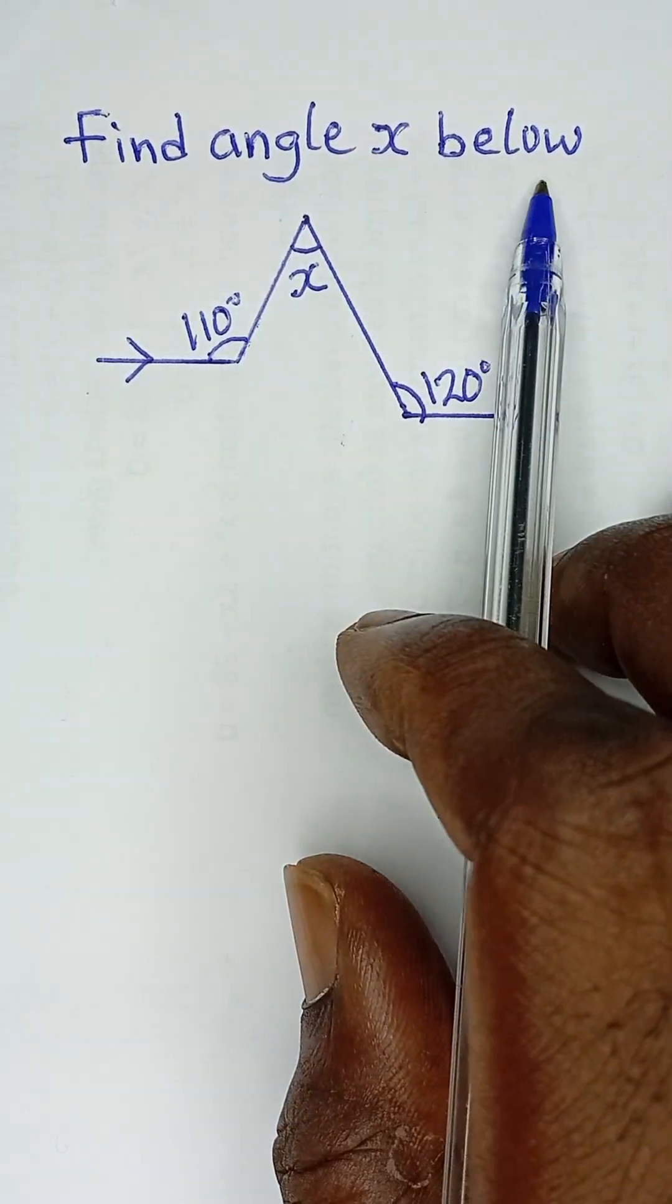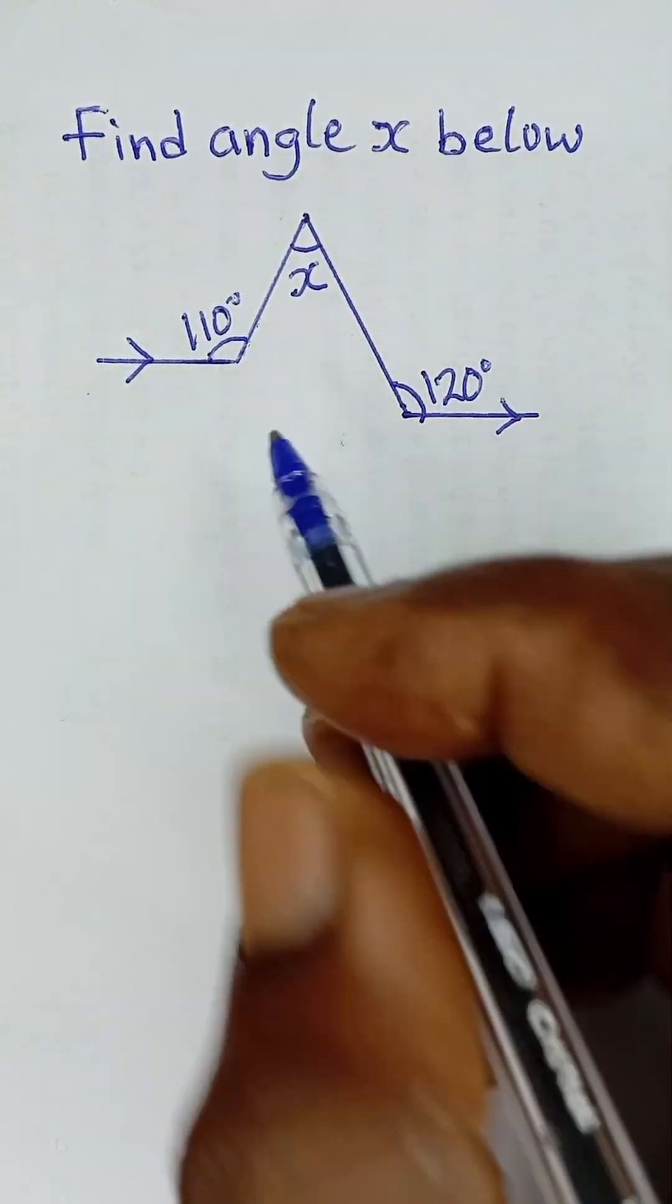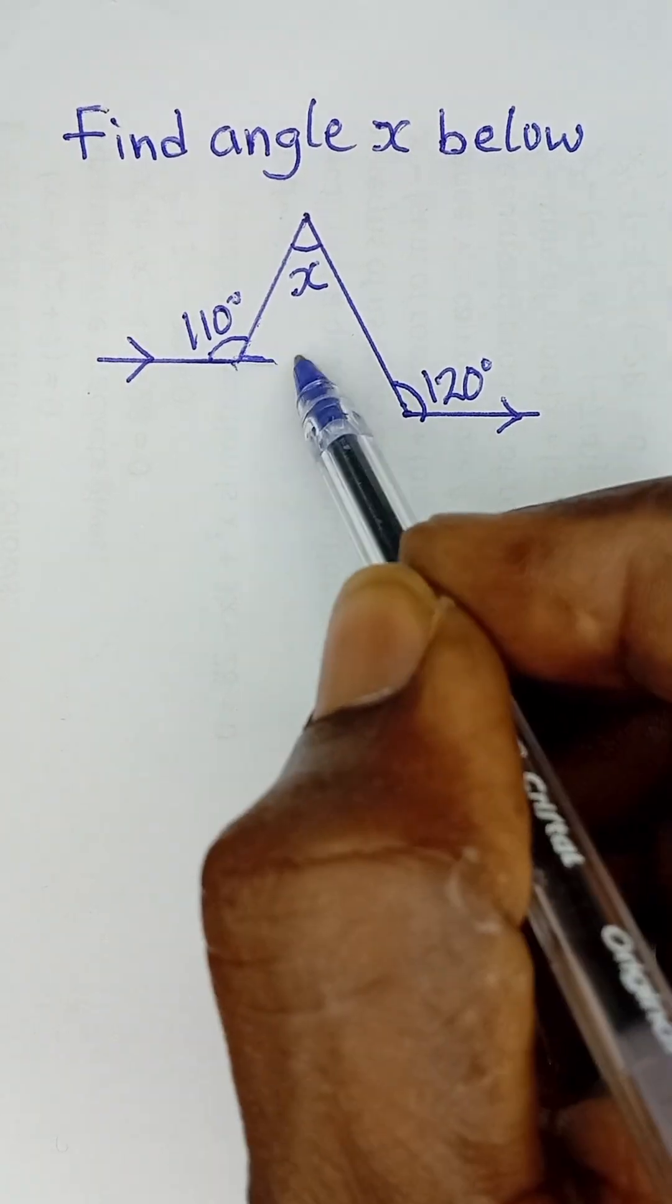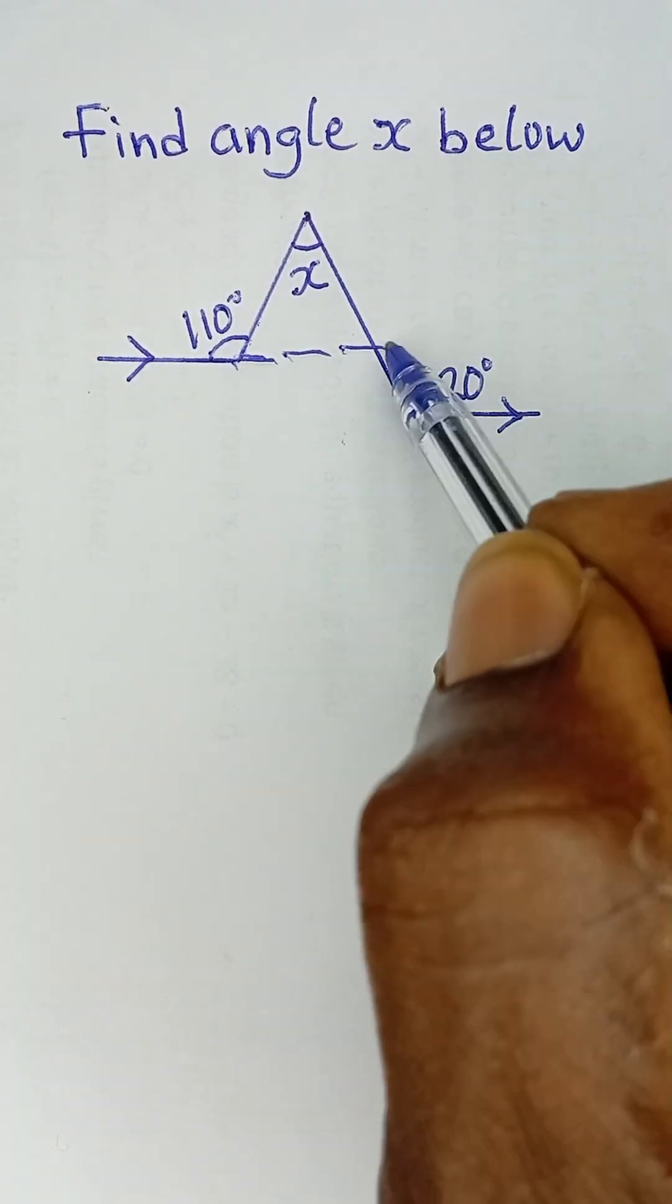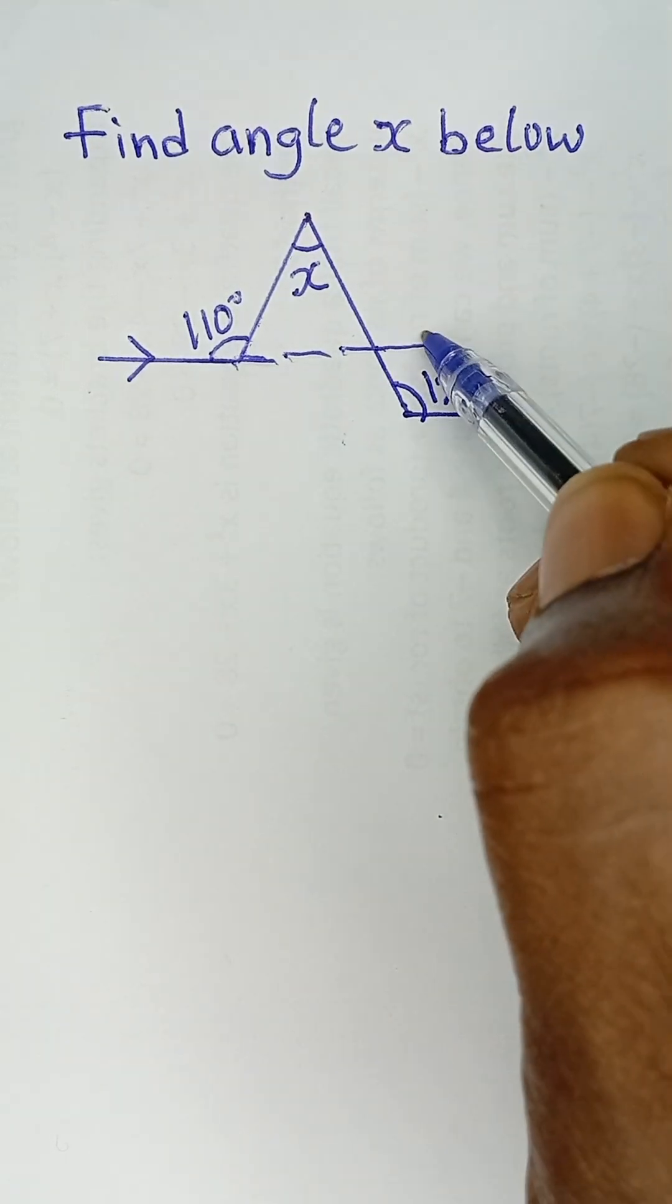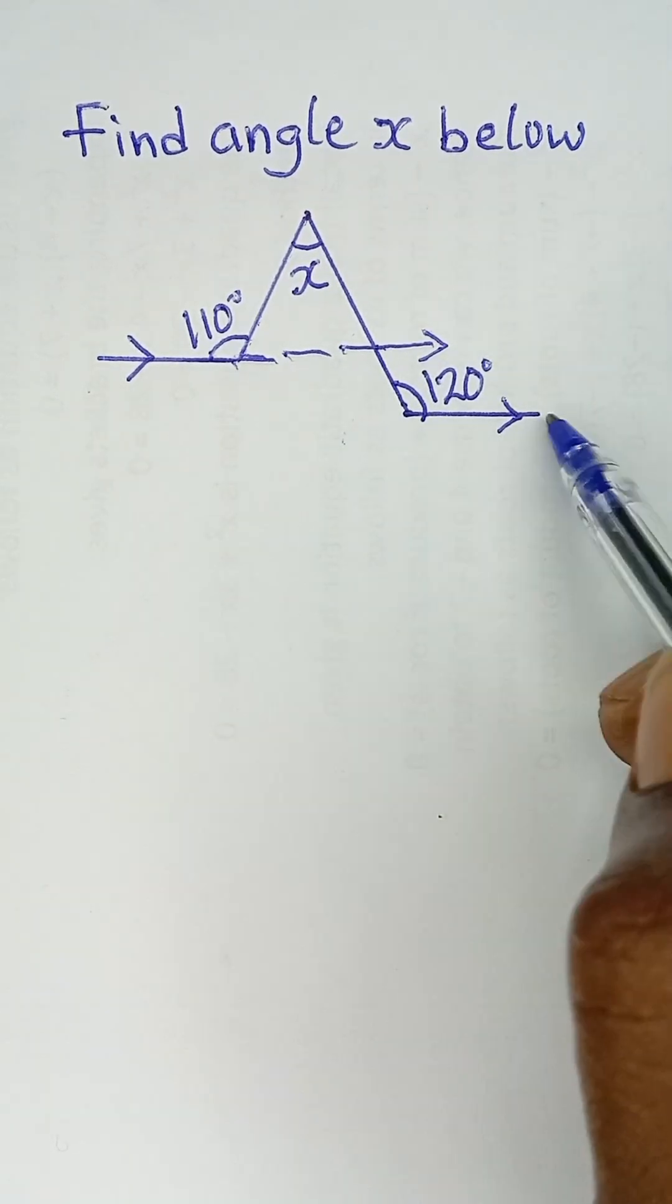Find angle x below. The first thing we can do here is trace this parallel line so that it will be parallel to this one as well.